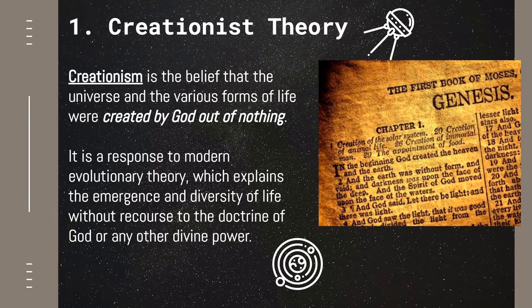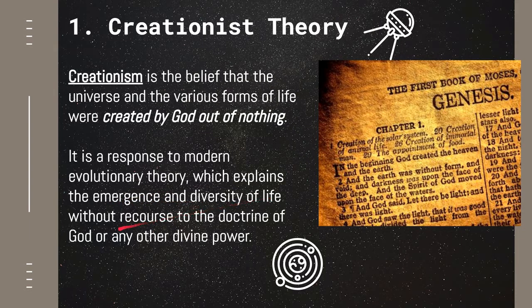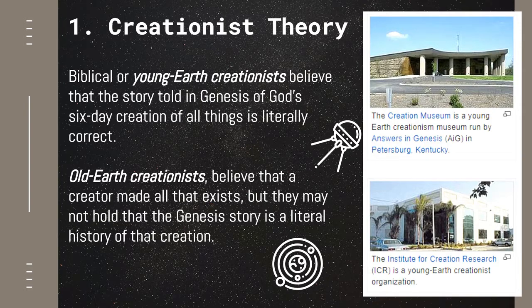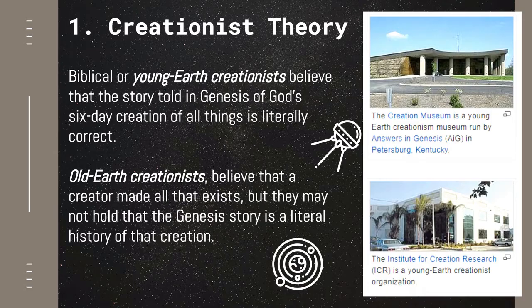The creationist theory, or creationism, is the belief that the universe and the various forms of life were created by God out of nothing. We are familiar with the book of Genesis chapter 1, which states that everything on this earth and the universe was created by God within six days, and on the seventh day he rested. The creationist theory is actually a response to the modern evolutionary theory, which explains the emergence and diversity of life without recourse to the doctrine of God or any other divine power. There are two types of creationists: the biblical or young earth creationists, who believe the story told in Genesis of God's six-day creation to be factually correct. Based on computations from measurements in the Bible, that would make the earth around 6,000 to 10,000 years old — in direct contradiction to the established age of the earth, which is around 4.5 billion years old.